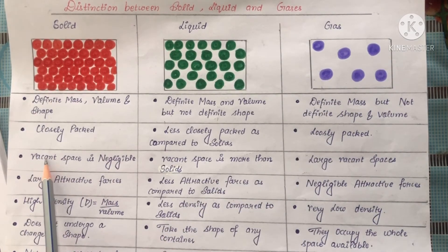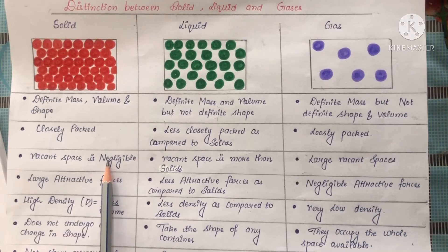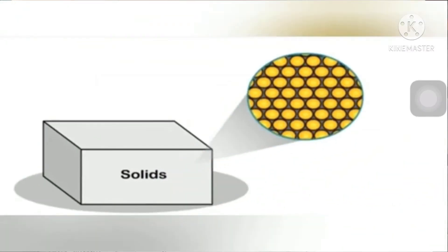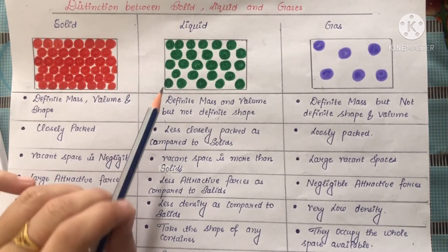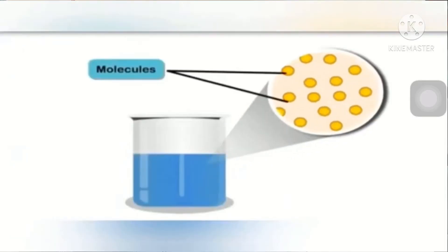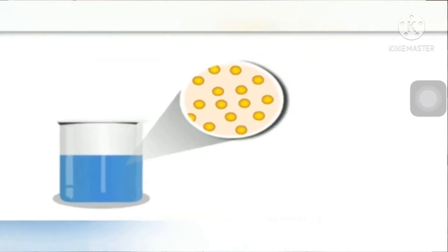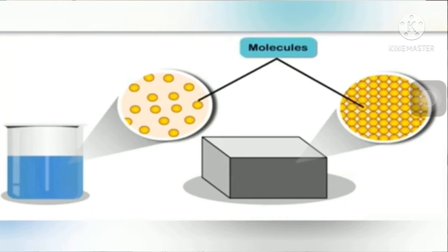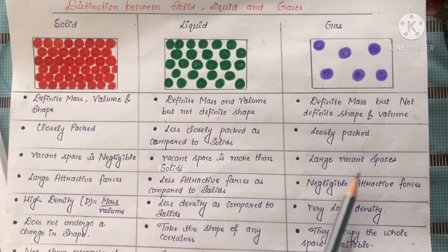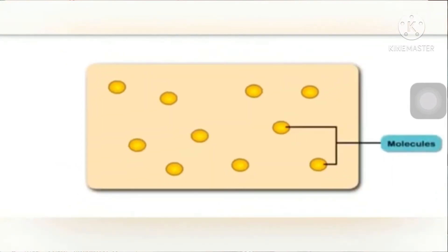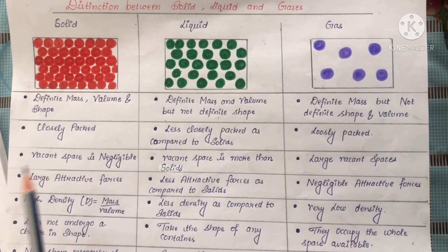Next, vacant space is negligible in case of solids — there are very less, or you can say negligible, vacant spaces between the particles. In case of liquid, the vacant space is more than that of the solid. You can look at here: in solids the vacant spaces are negligible or very small, but in case of liquids the vacant spaces are more than that of the solids. In case of gases, there are large vacant spaces present between the particles, or you can also say that these are the intermolecular spaces.